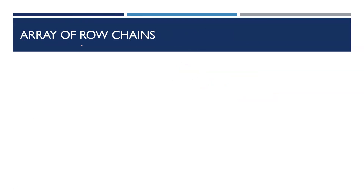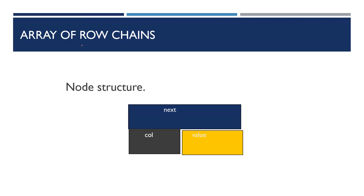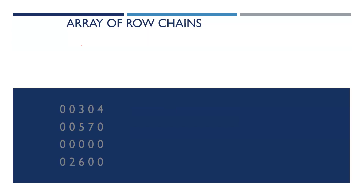The third representation is array of row chains. We move with row chains — one more simple node structure with next value and column value. We put it into a linked list — very simple. This is our own example.